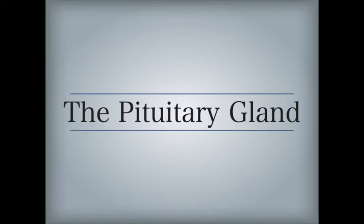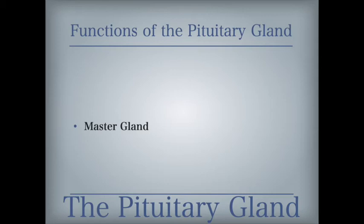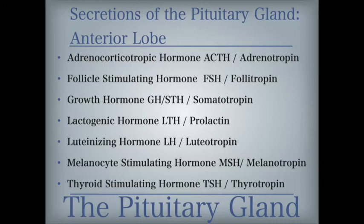The pea-sized pituitary gland is located at the base of the brain just below the hypothalamus and is composed of anterior and posterior lobes. The primary function of the pituitary gland, also known as the master gland, is to control the activity of other endocrine glands. The pituitary acts in response to stimuli from the hypothalamus. This system of checks and balances maintains an appropriate blood level of each hormone. The front of the pituitary gland secretes adrenocorticotropic hormone, also known as adrenotropin, which stimulates the growth and secretions of the adrenal cortex.